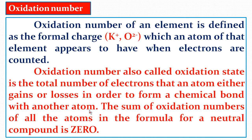The oxidation number is the total number of electrons that an atom either gains or loses in order to form a chemical bond with another atom. For example, NaCl dissociates into Na⁺ and Cl⁻. The sum of the oxidation numbers of all the atoms in a formula of a neutral compound is equal to zero.